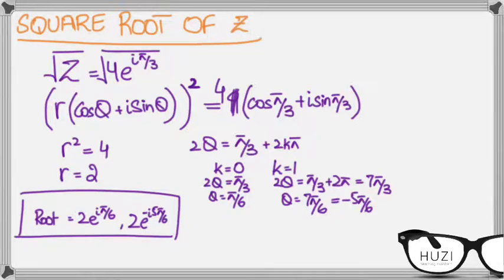Say if I did k equals to 2. So this would have meant that 3 theta equals pi by 3 plus 4 pi. Because it's a cube root, this means that the initial complex number was a cube, which means that r cube equals to 4 in this case.